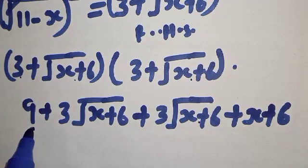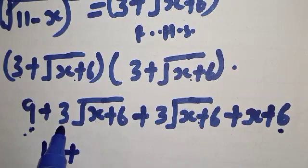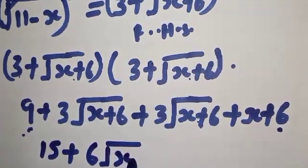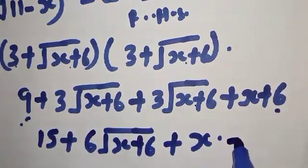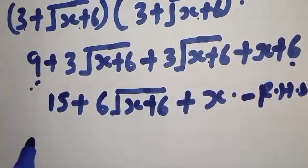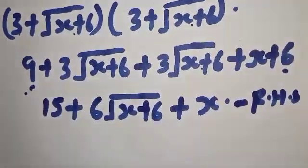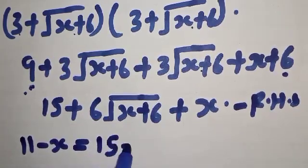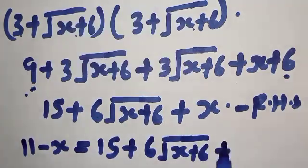So the right-hand side simplifies to 9 plus 6 times square root of X plus 6, plus X plus 6, which is 15 plus 6 square root of X plus 6 plus X. Combining both sides from our equation, we have 11 minus X equals 15 plus 6 square root of X plus 6 plus X.